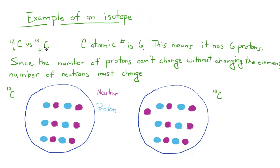Since you have the elemental symbol right here, you already know how many protons you are going to have. The symbol C stands for carbon. Carbon has 6 protons. And since the number of protons can't change without changing the elements, the number of neutrons has to change. For example, carbon 12 is going to have 6 protons and 6 neutrons. But carbon 13 has 1 extra neutron. It's still going to have 6 protons, but instead of 6 neutrons, it's going to have 7 neutrons.